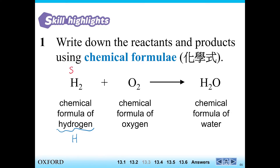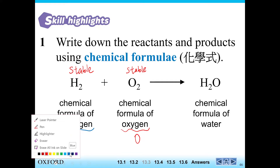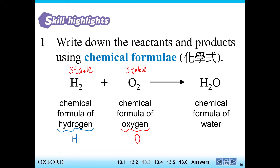You'll learn more about this in senior chemistry. Actually, oxygen gas — you have learned that the atomic symbol for oxygen is O, but oxygen gas does not exist as O by itself; it exists as O2, because that is the most stable form. We'll learn more about this in senior chemistry. And for water, we have the chemical formula H2O, which you know. So for a chemical equation, we will have the chemical formula — like H2, O2, H2O — and also it's an equation because it has the addition sign and the arrow.